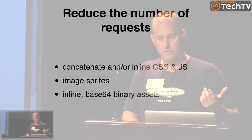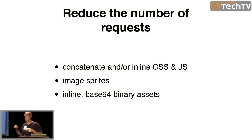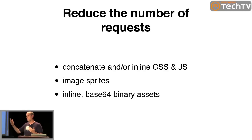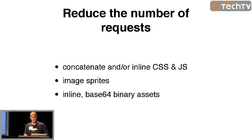Some of the basic principles are going to be similar to what you may do on the open web as well, so they aren't just necessarily mobile specific. One of the things we try to do is reduce the number of requests. On mobile, as opposed to the desktop web, latency is a much bigger issue. You may have latency of 50 milliseconds on a regular web page, but on mobile that can be 500 milliseconds. If you have 10 requests for different CSS files, JavaScript files, and images, that's going to add up. So the basic thing is just to concatenate and sometimes even inline that CSS and JavaScript, reducing the number of requests using image sprites.